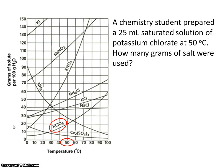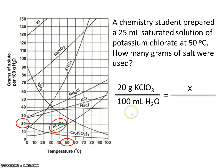We're at 50 degrees, so let's go up until we hit the line, and then let's go over. It looks like the saturation amount at 50 degrees for potassium chlorate is 20. That means we can dissolve 20 grams of salt in 100 grams of water. But back to our question, a chemistry student prepared 25 milliliters of a saturated solution. They didn't prepare 100 milliliters, they prepared 25 milliliters. So we want to know how many grams of salt were used. We can set up a simple proportion, and then we can do some algebra. So the answer is 5 grams.